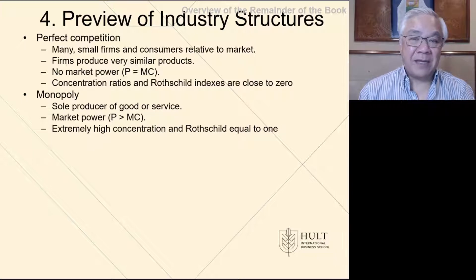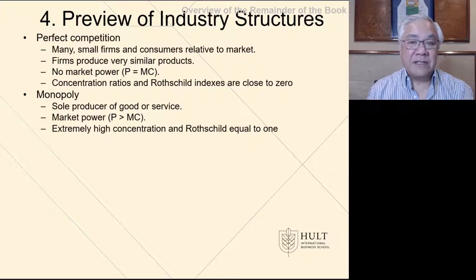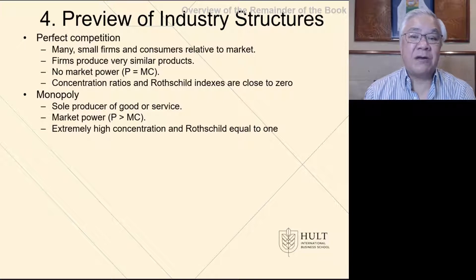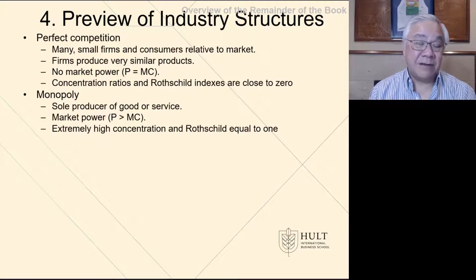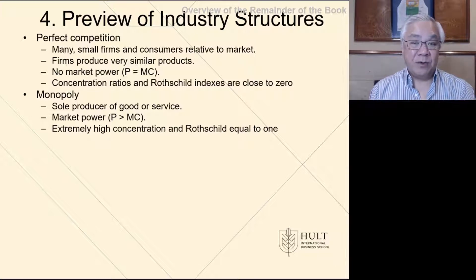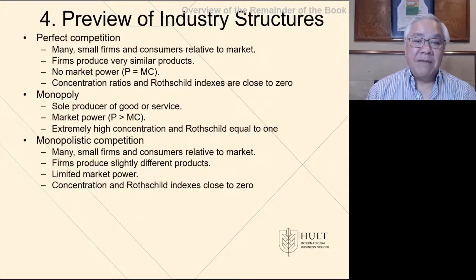The second is monopoly — the exact opposite — where there's one dominant player and the sole provider of goods or services can have a lot of power. Therefore, the price in this case is not equal to marginal costs; it is greater than marginal costs, because they can dominate the market and set the price. Here we'll see high concentration ratios in both FORFIRM and HHI, and Rothschild indices equal to one.